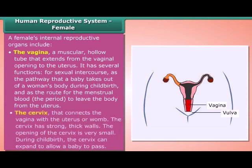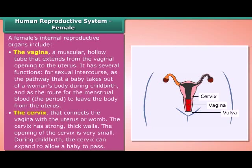The cervix connects the vagina with the uterus or womb. The cervix has strong, thick walls, and its opening is very small. During childbirth, the cervix can expand to allow a baby to pass.